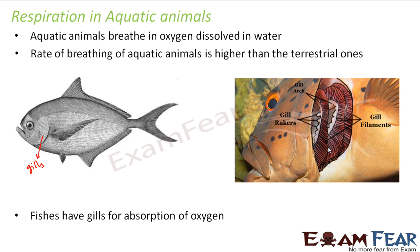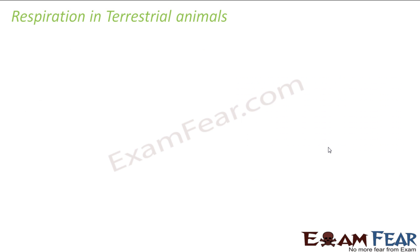What happens when you have this filament-like structure? The absorption increases. Like I told you before, inside the small intestine we had villi — the small finger-like projections — in order to increase the surface area so that absorption increases. Similarly, inside the gills also we have gill filaments in order to increase the surface area so that the absorption of oxygen also increases.